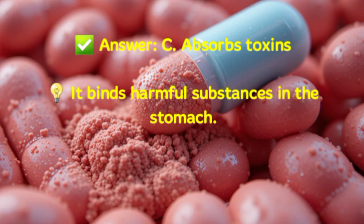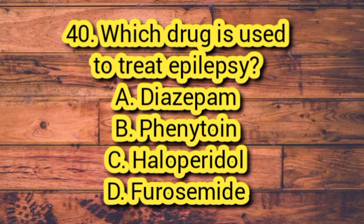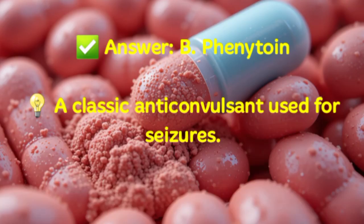Question 40. Which drug is used to treat epilepsy? A. Diazepam. B. Phenytoin. C. Haloperidol. D. Furosemide. Answer: B. Phenytoin. A classic anticonvulsant used for seizures.